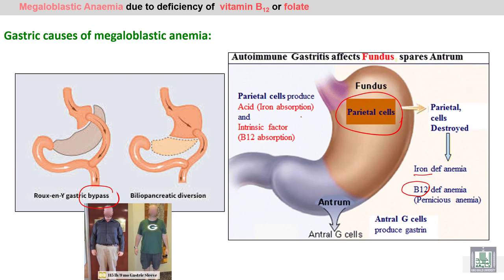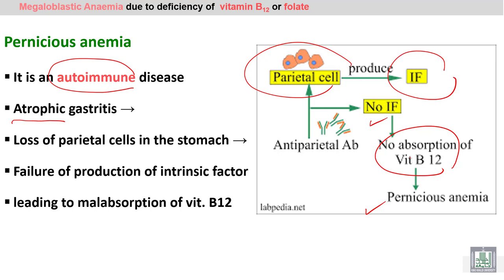Gastric causes include gastric bypass surgery to reduce weight, or removal of part of the stomach, which may affect the parietal cells. This leads to decreased intrinsic factor secretion, causing vitamin B12 deficiency. In addition, loss of HCl from the stomach leads to iron deficiency.